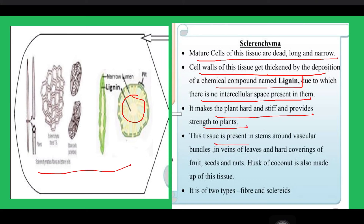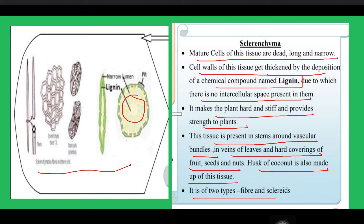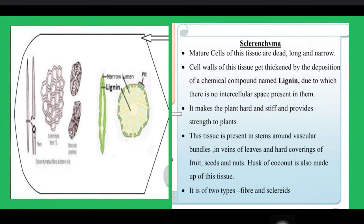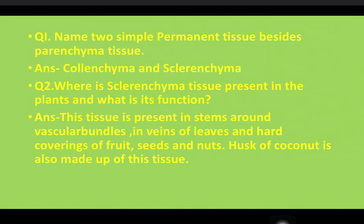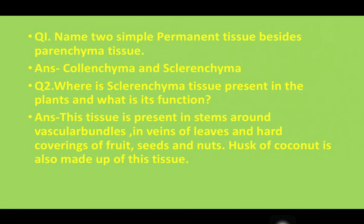Sclerenchyma tissue is present in stems around vascular bundles — that is xylem and phloem — in veins of leaves, and in hard coverings of fruits, seeds, and nuts. The husk of coconut is also made up of this tissue. Sclerenchyma is of two types: fibers and sclereids.